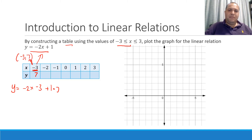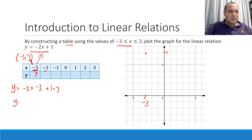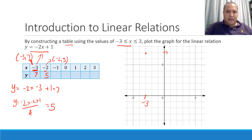So on the graph I'll go to negative 3, then up to 7, and plot that point. Then substituting in the next value, x equals negative 2: y equals negative 2 times negative 2 plus 1. Negative 2 times negative 2 is positive 4, and 4 plus 1 equals 5. So this gives me the coordinate negative 2, 5, and I plot that point on the graph.